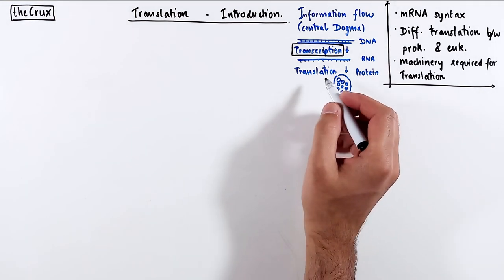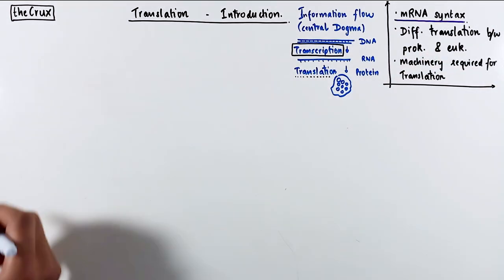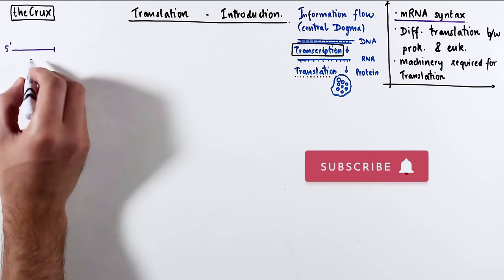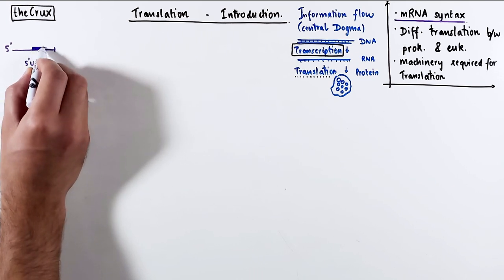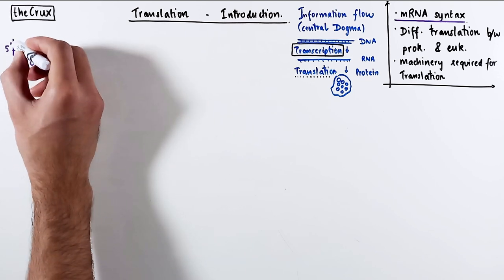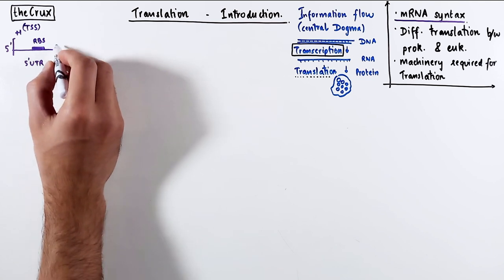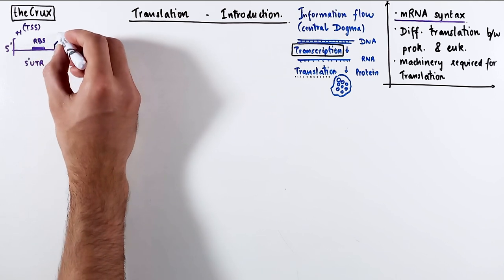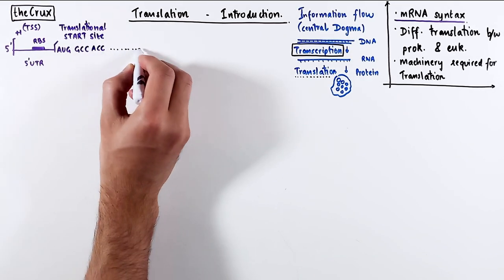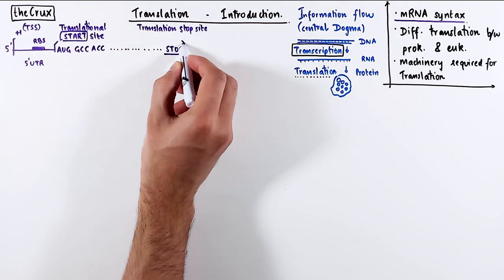For this video, I am going to focus on translation only. Let's talk about the mRNA syntax first. Following transcription, you get the mRNA that has a 5' UTR, which is a region which is not translated but serves other important functions. One of them is that it often contains a ribosome binding site, which is a site that ribosome recognizes. The first base of mRNA is called transcription start site. But right after the untranslated region, you have the translation region. The start of that is called the translation start site, and at the end of the translation region, you have the translation stop site.